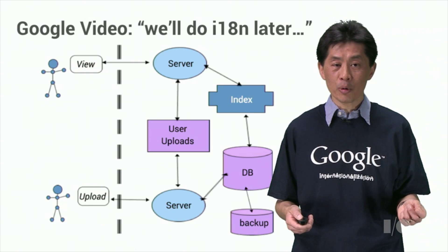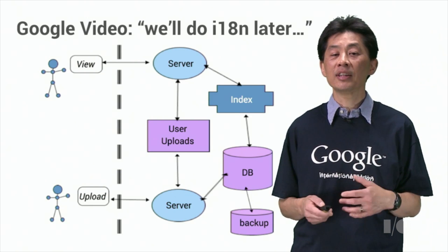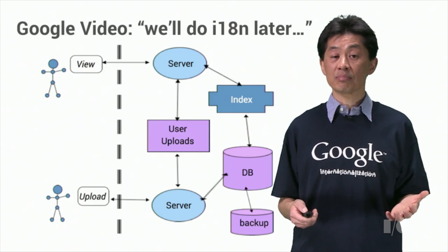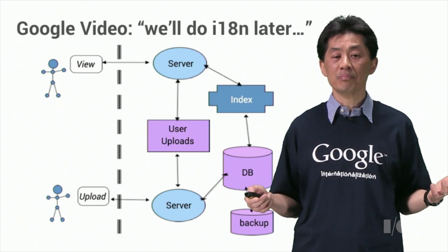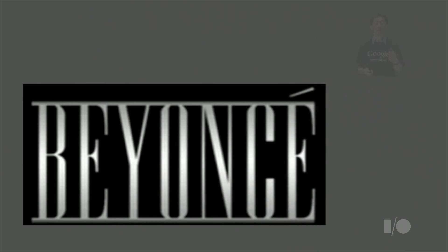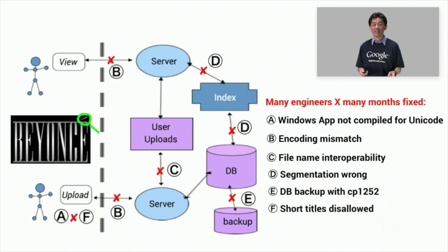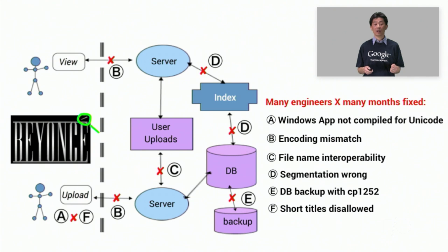Long ago, pre-YouTube, we had a product called Google Video. That product launched in the U.S. and didn't worry about internationalization. This diagram shows the data paths for uploading, indexing, and serving user videos. The product team told us they used Unicode — so what possibly could go wrong? How about uploading a Beyoncé video? You'll notice she has an accent on the E in her name. That accented E broke every single data path for various reasons relating to non-ASCII data. Some problems are hard to find; some even corrupted user data. It took several engineers many months to find and fix all of these bugs. All of them could have been avoided with correct design decisions and using existing programming techniques, and would have had very little impact on their original development effort and schedule.